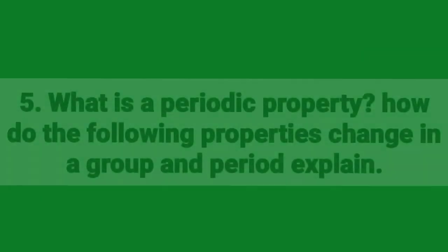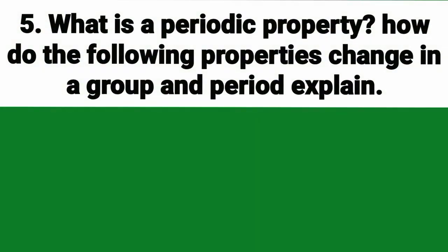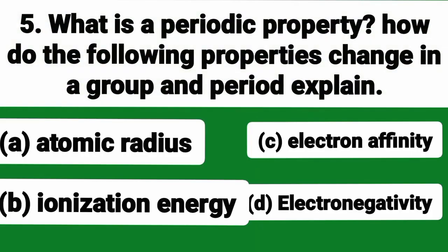What is a periodic property? How do the following properties change in a group and period?